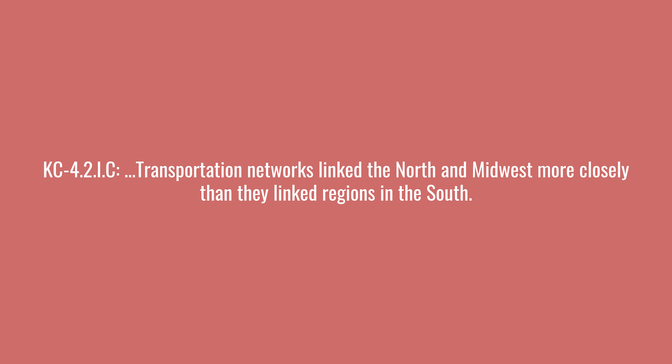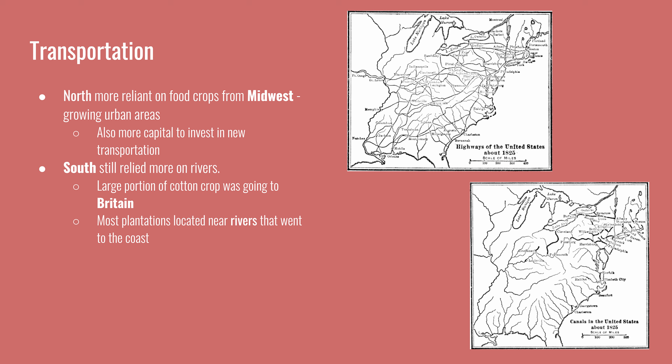Transportation networks linked the North and Midwest more closely than they linked the South. Maps of highways, roads, and canals in the United States in 1825 show far more connections in the Northeast and West than in the South. The majority of canals were constructed in the Northeast, making the North more reliant on food crops from the Midwest. The South did not develop as many man-made transportation routes because of its abundance of navigable rivers leading to ports along the Atlantic and the Gulf.